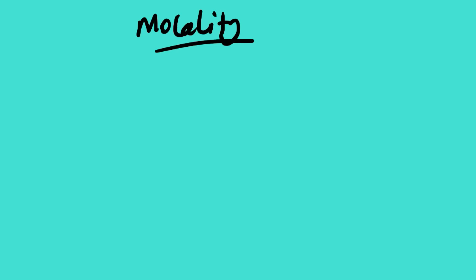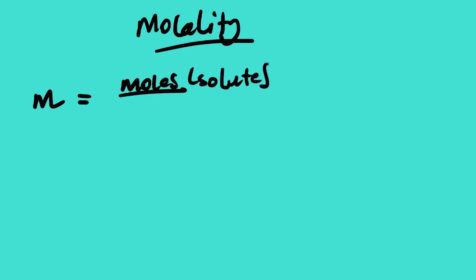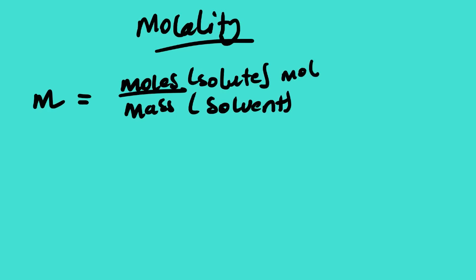Let us start with molality. Molality, which we use the symbol M to represent, is defined as the amount of solute in moles divided by kilograms of solvent. So it's the number of moles of solute divided by the mass of the solvent. The mass of the solvent must be in kilograms, not in grams.